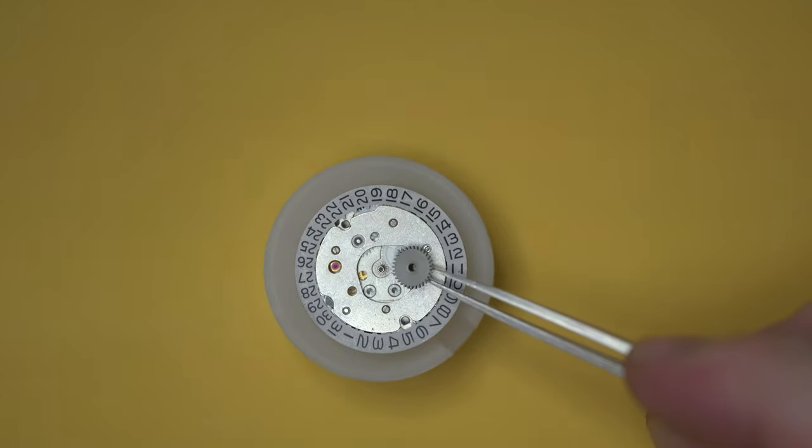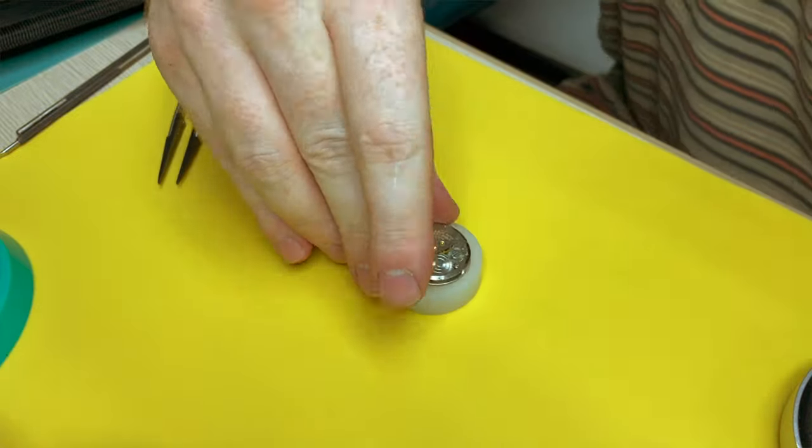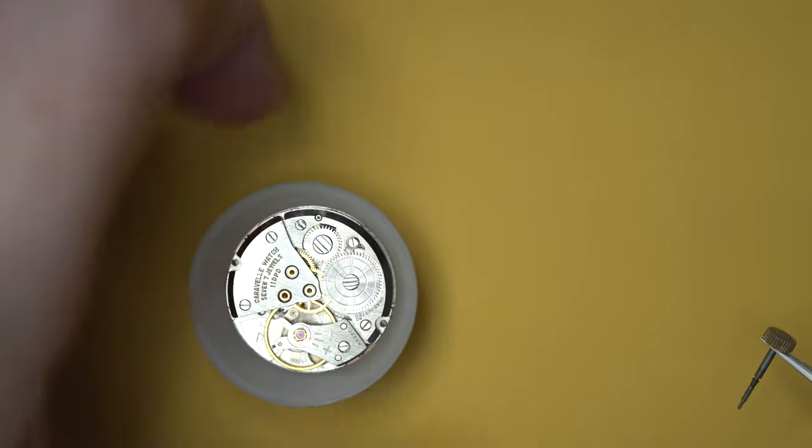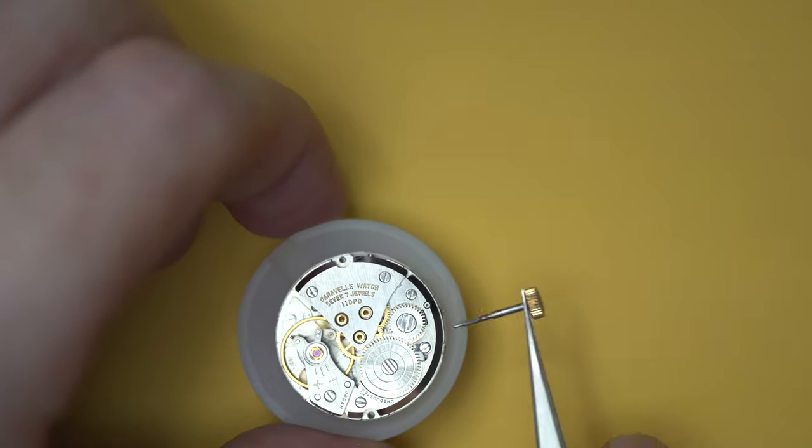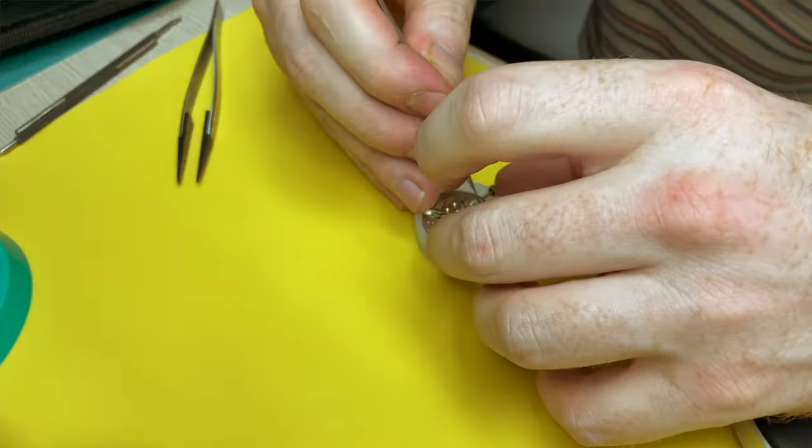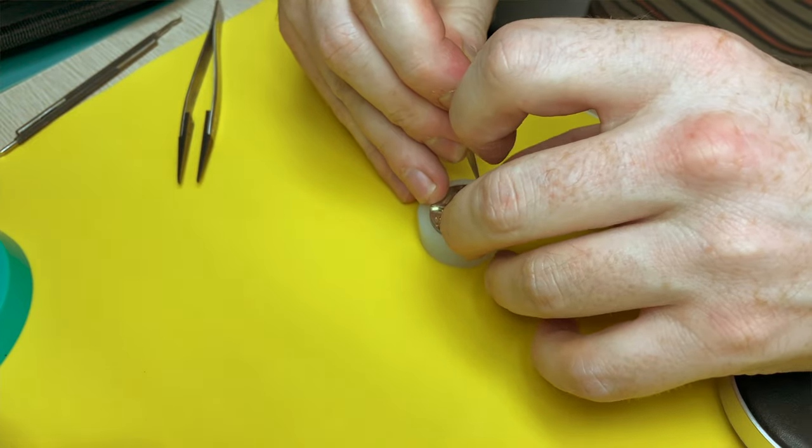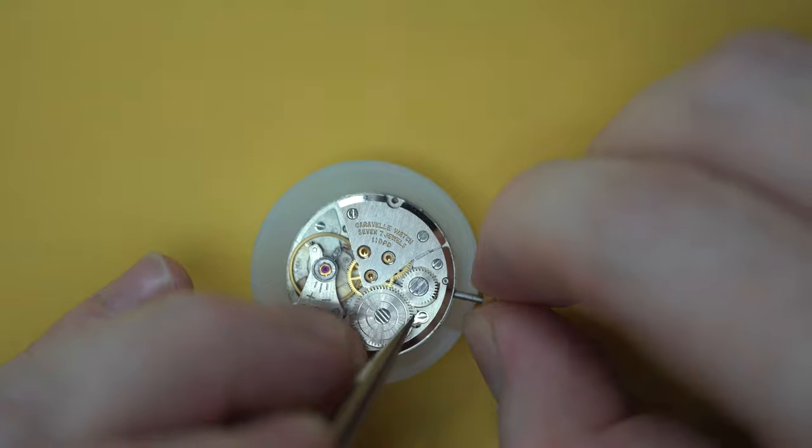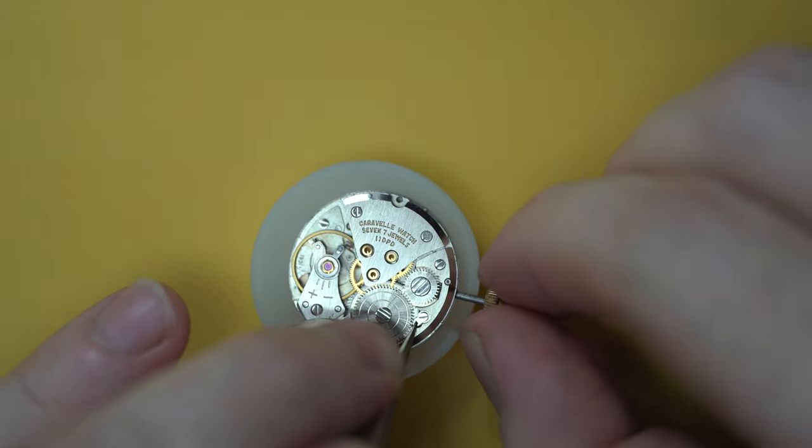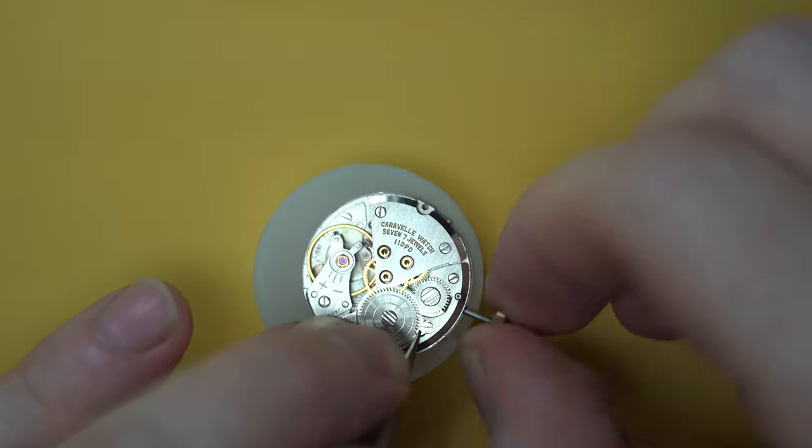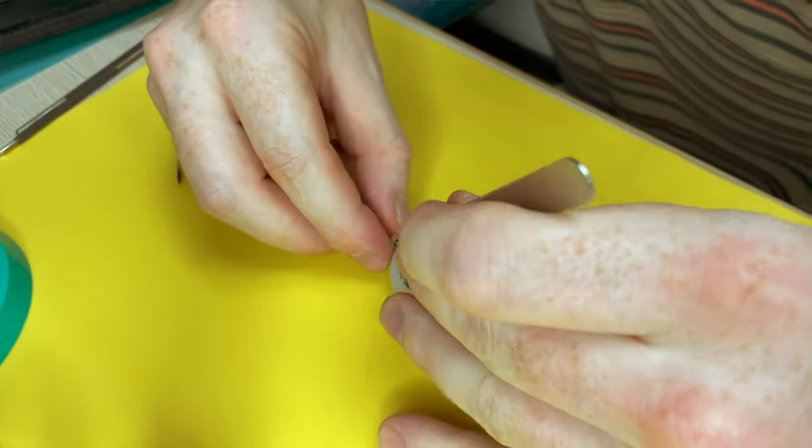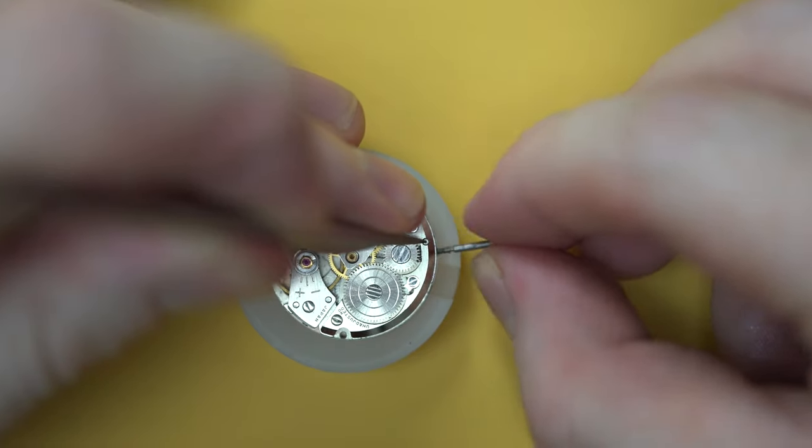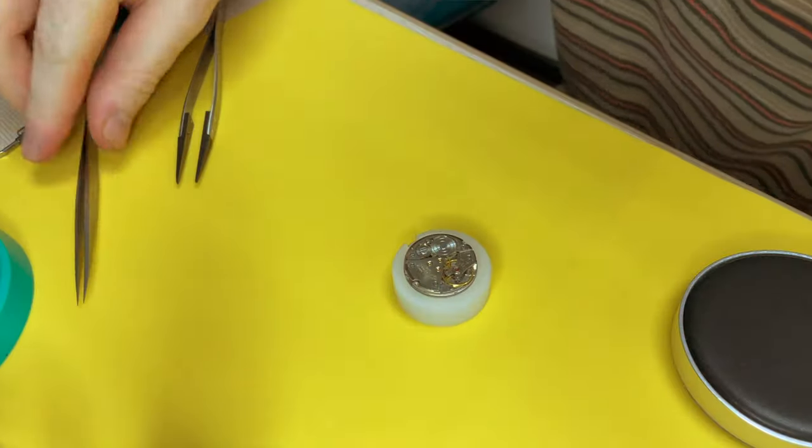As we can see on this one, this one's only a seven jeweled movement. This one's called Bulova 11DP, made in Japan, and it's also used in some citizen watches I believe. Only seven jewels, so not the most expensive of movements. But on the time graph it wasn't running horrendous. Maybe it just needs a clean. We shall see.